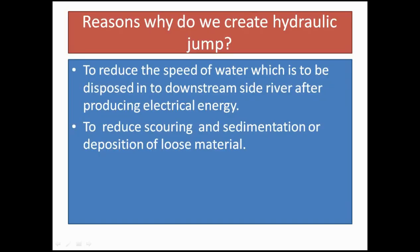Why do we create hydraulic jumps? In a hydropower plant, we use the kinetic energy of flowing water to produce electrical energy. After producing electrical energy, if the high-velocity water is directly disposed into the downstream side of the river, scoring may occur. To avoid this, we create a hydraulic jump to reduce the velocity of water before disposal, and also to reduce scoring and sedimentation of loose material.